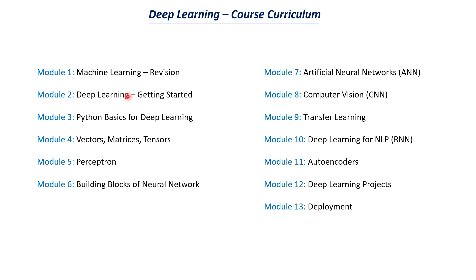These are all the 13 modules we have in our deep learning course. In the first module, let's do some revision on the machine learning concepts we've discussed so far. It's best if you have learned all the topics I explained in my machine learning course, so you would understand this course much better. I'll probably make a couple of hour-long videos discussing some of the important topics from that machine learning course.